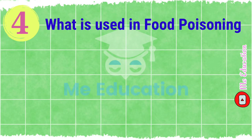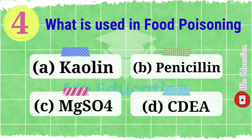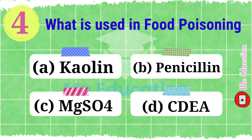Question number four: what is used in food poisoning? Options: A) kaolin, B) penicillin, C) magnesium sulfate, D) EDTA. The right answer is option A, kaolin.